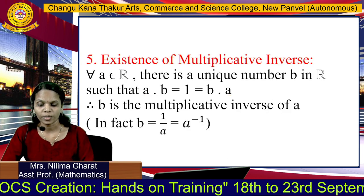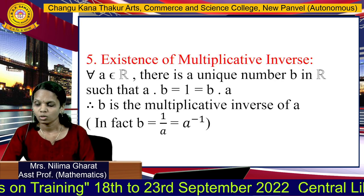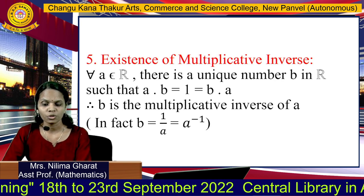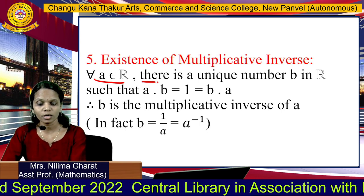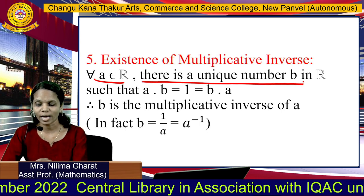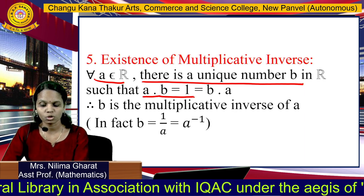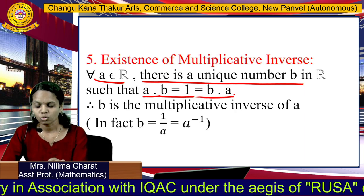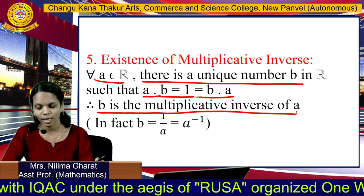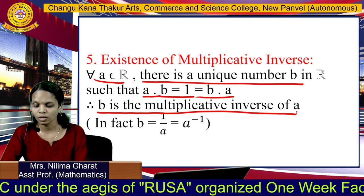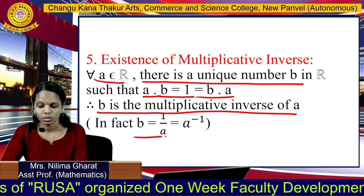The fifth property with respect to multiplication is the existence of multiplicative inverse. For any real number A, there is a unique real number B such that A into B equals 1, which equals B into A. So B is the multiplicative inverse of A, and B can also be written as 1 upon A, or A inverse.